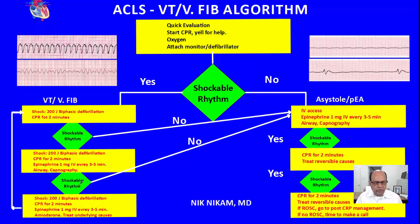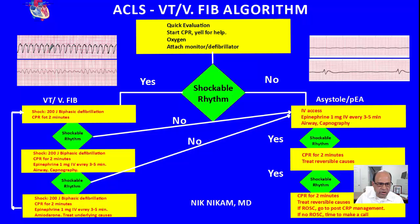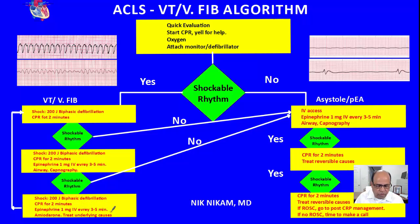Epinephrine is given as a 1-milligram IV bolus followed by a 20 mL normal saline flush, and this can be repeated every three to five minutes. If the rhythm is ventricular tachycardia or ventricular fibrillation, we start the patient on amiodarone: an IV bolus of 300 milligrams followed by 150 milligrams a few minutes later. We also need to address any underlying causes.